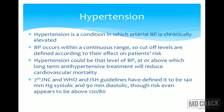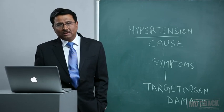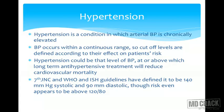Hypertension is a condition in which arterial blood pressure is chronically elevated. Since blood pressure occurs within a continuous range, cut-off levels are defined according to the effect on the patient's risk. Hypertension could be that level of blood pressure at or above which long-term antihypertensive treatment will reduce cardiovascular mortality. The JNC 7th report and WHO/International Society of Hypertension Guidelines define it as more than 140 mmHg systolic and 90 mmHg diastolic, though risk even appears when blood pressure is above 120/80.